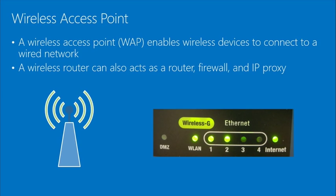A wireless access point enables wireless devices to connect to the network, and can also act as a router, firewall, and IP proxy. A consumer wireless device connecting both wired and wireless clients to the internet is simultaneously functioning as a switch, router, and bridge. Because it connects wireless clients to a wired network, it bridges different media types on either side of the device.